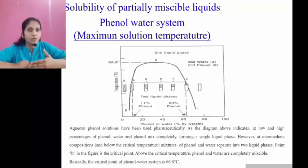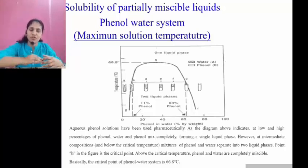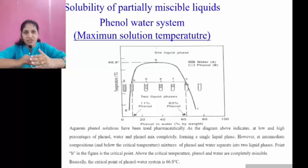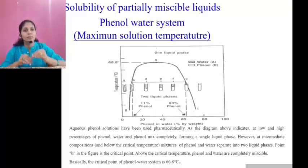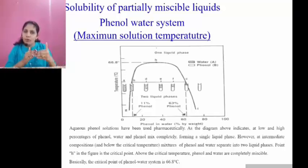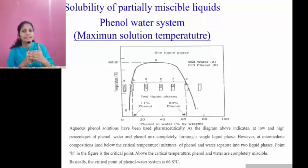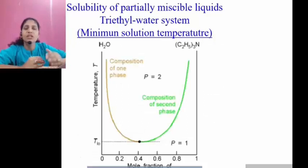But intermediate compositions of phenol in water or water in phenol form two layers: the first layer is water in phenol and the second is phenol in water. Above point h, all intermediate compositions form a homogeneous layer; below point h they form two layers. Above the temperature of 66.8 degrees centigrade all compositions become miscible, while below 66.8 degrees centigrade they are immiscible.